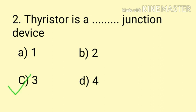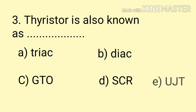Question number three: Thyristor is also known as __. Option A: triac, Option B: diac, Option C: GTO, Option D: SCR, and Option E: UJT. The correct answer is option D.